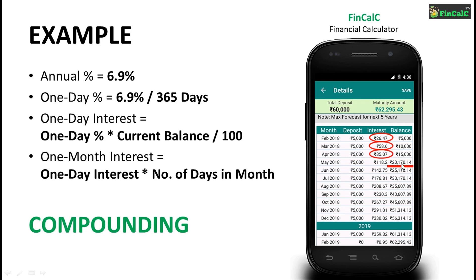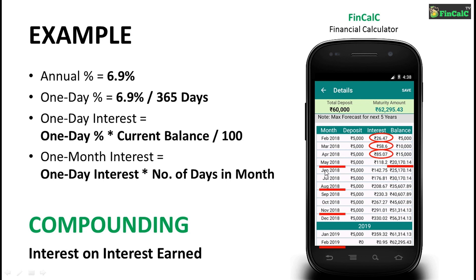This concept is called compounding, in which we gain interest on the interest that we have already earned. The compounding happens every 3 months from the start of the recurring deposit, i.e., in the months of May, August, November and February.